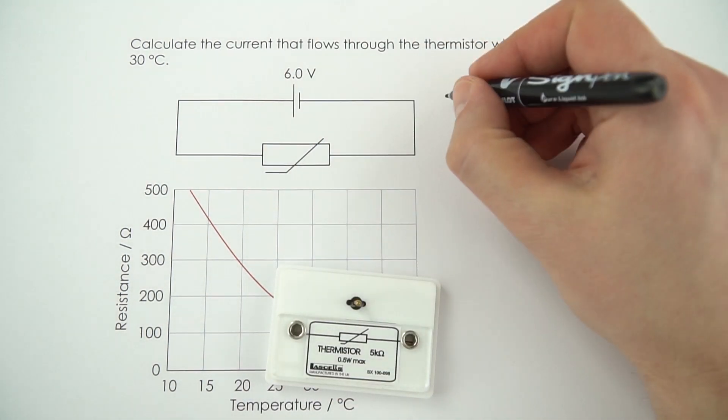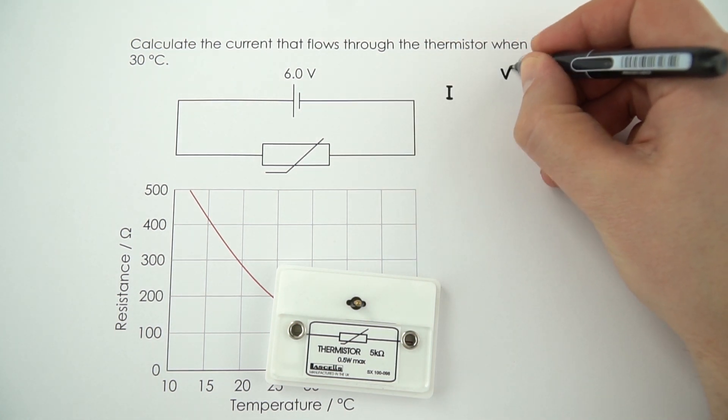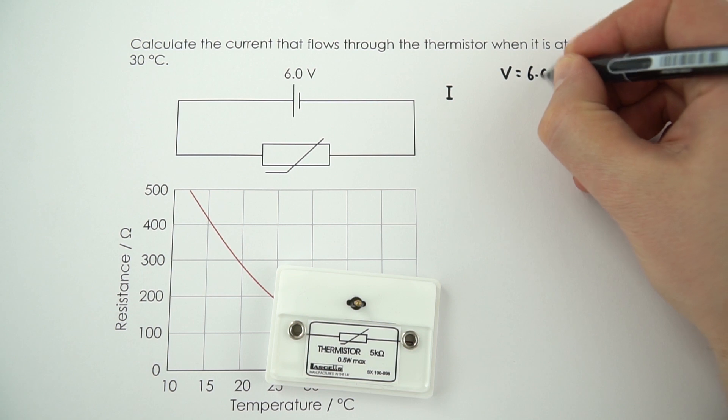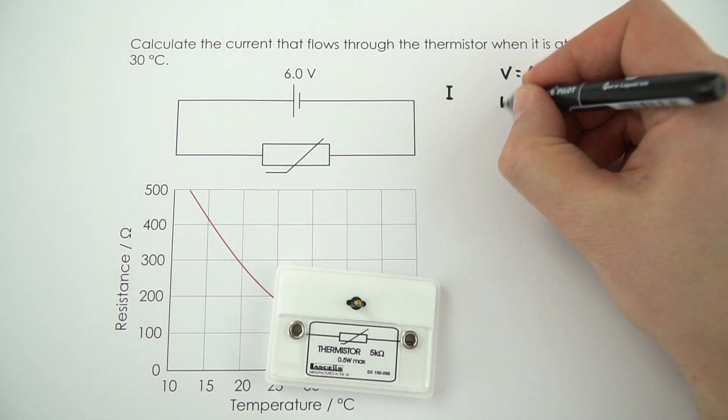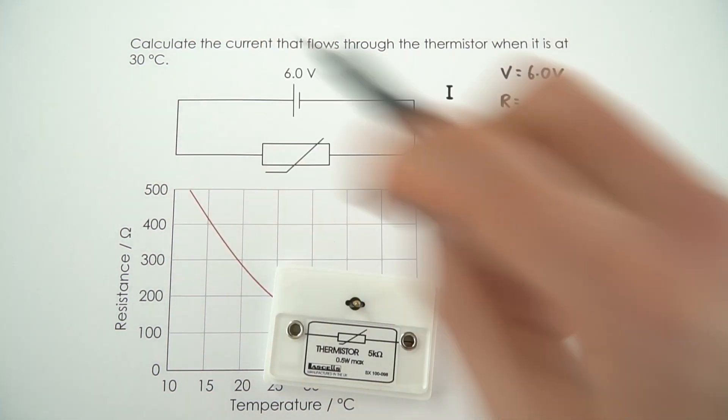Now in order to work out this current, we need to know two things. We need to know the value of the potential difference, which in this case is 6.0 volts, and we need to know the value of the resistance. But at the moment we don't know it. But we do know it's at 30 degrees.